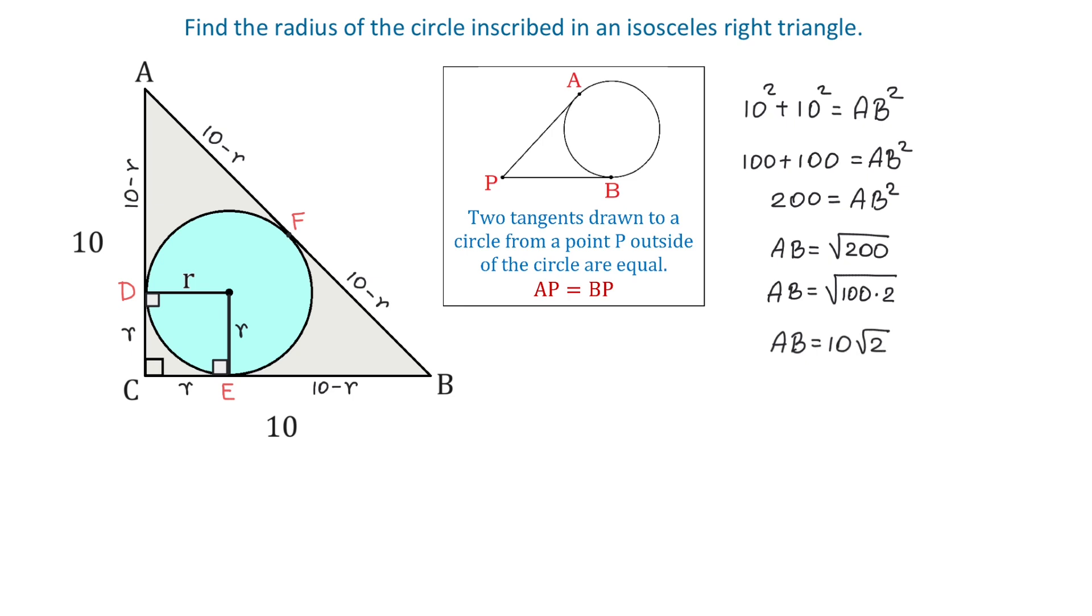So, the hypotenuse is 10 square root of 2. Now, AF is half of the hypotenuse. So, we can write that AF equals 10 square root of 2 divided by 2, which is 5 square root of 2.